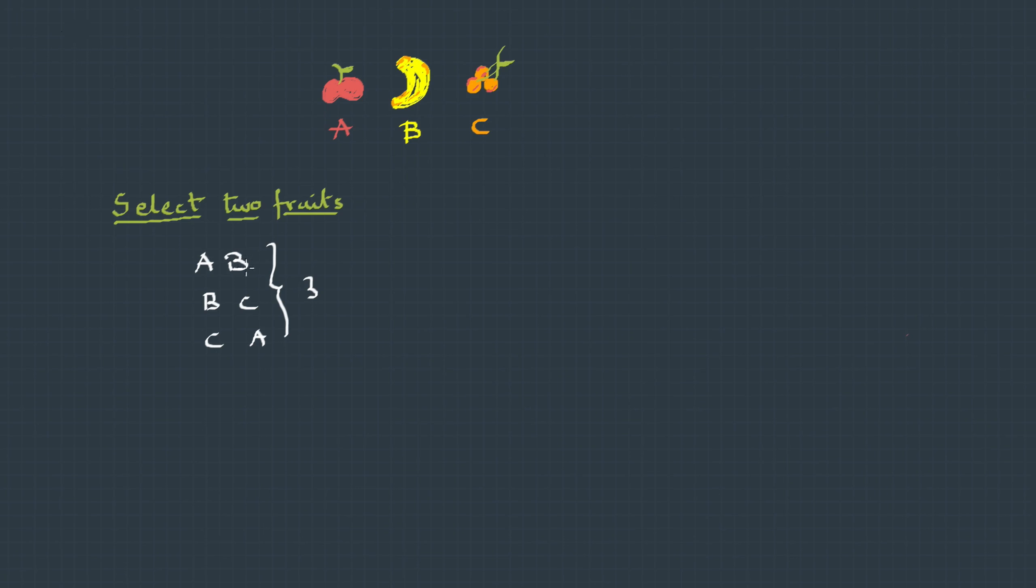The same thing, if I say arrange two fruits, then what will you do? You'll pick up two fruits, maybe apple and banana. So I can place the apple first then banana next, or banana and apple—two possibilities for one selection.